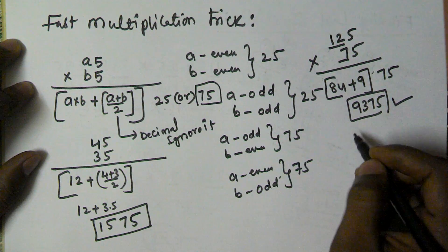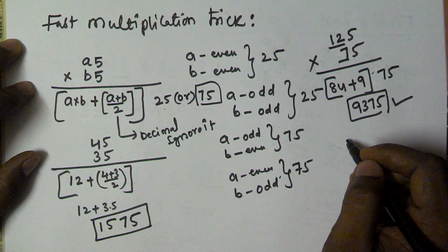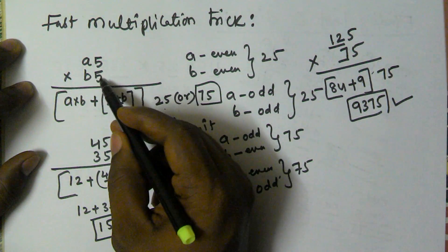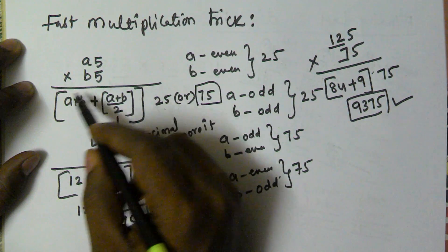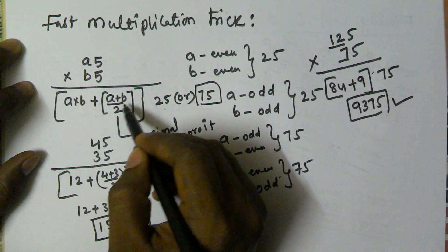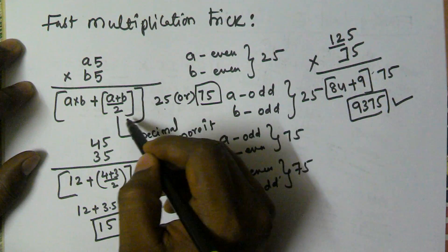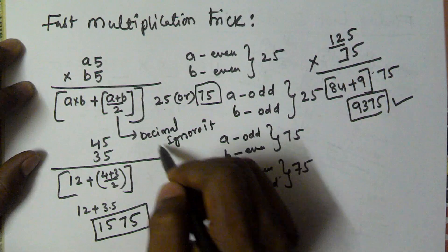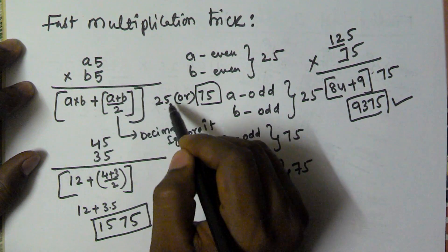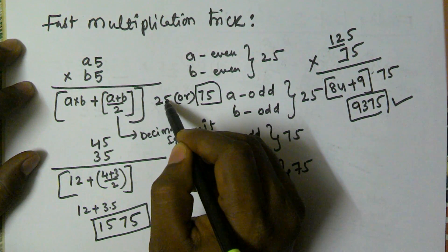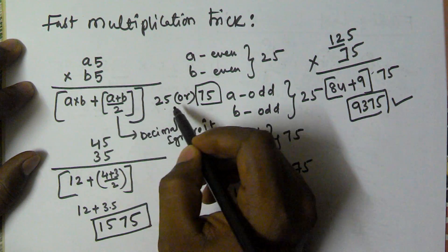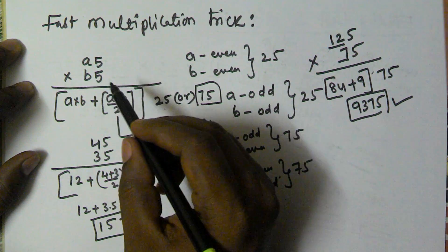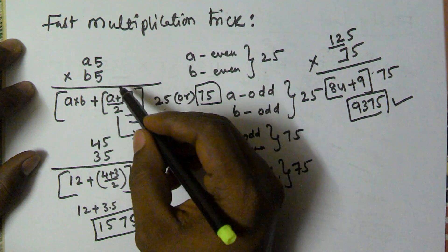So 125 into 75 is 9375. This is the generalized method you have to remember: a5 into b5, the result is a into b plus a plus b by 2, and then 25 or 75. If you are getting a decimal point here, ignore it. If a and b both are even, then the second part is 25; if a and b both are odd, we also take 25. If a is even and b is odd, or b is even and a is odd, we take 75.